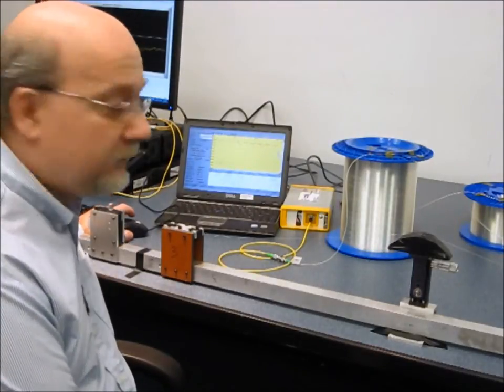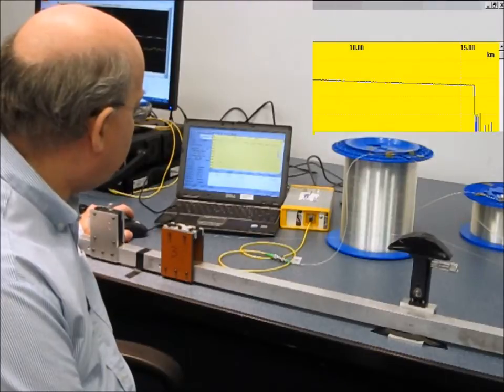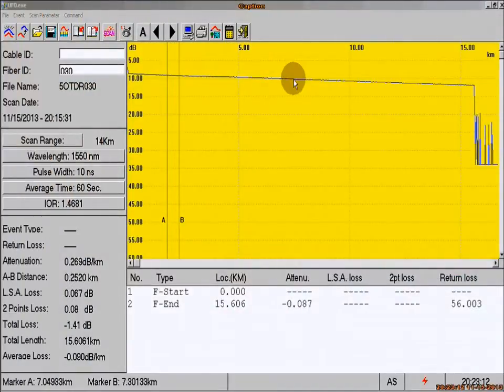Our screen here shows the output from the OTDR. This curve here, gradually going down, is a signal that is measured by the OTDR unit. It is a fairly smooth, flat, uniform line.